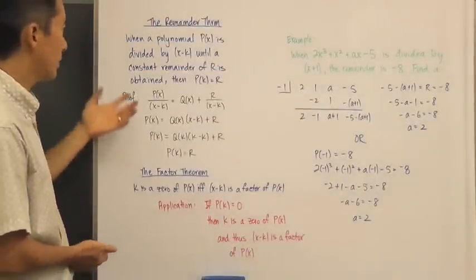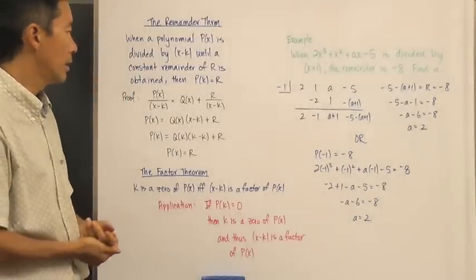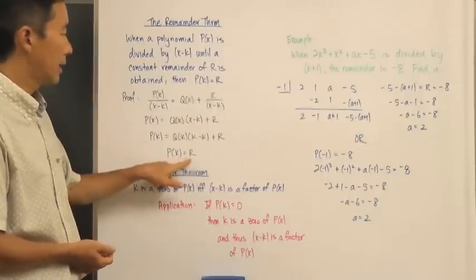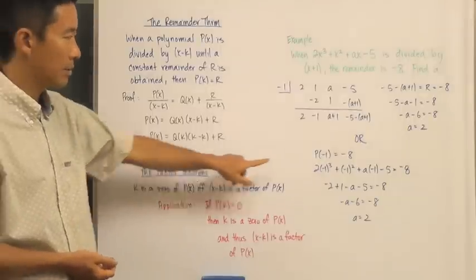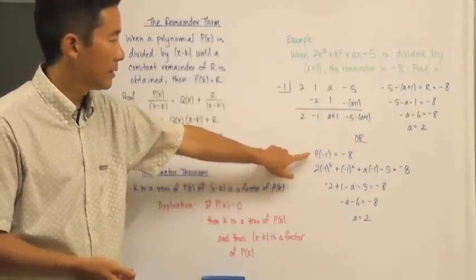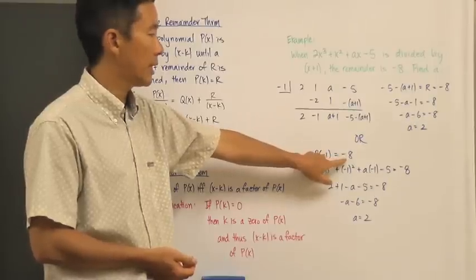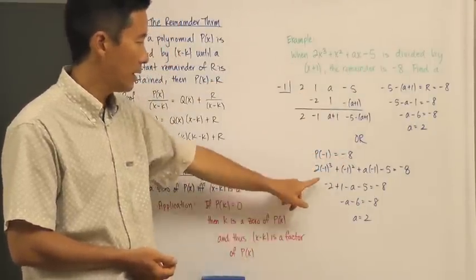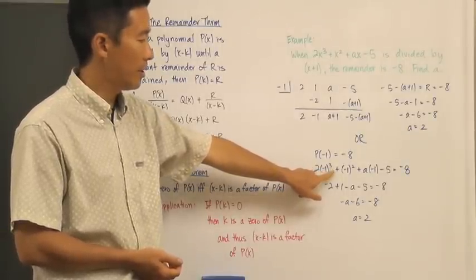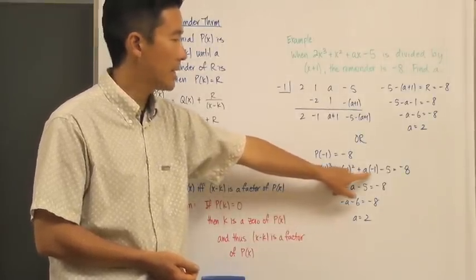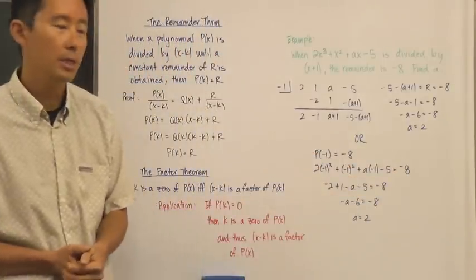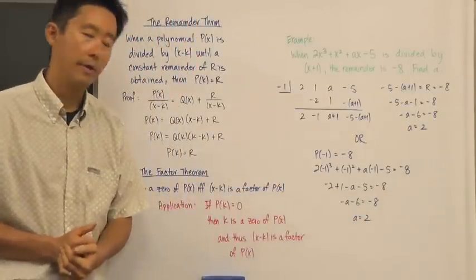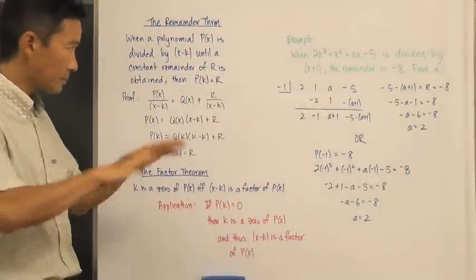The other method uses the Remainder Theorem directly: p(negative 1) equals negative 8. Substituting negative 1 into the polynomial gives 2 times (negative 1) cubed plus (negative 1) squared plus a times (negative 1) minus 5, and that must equal negative 8. Working through the math again gives us a equals 2.